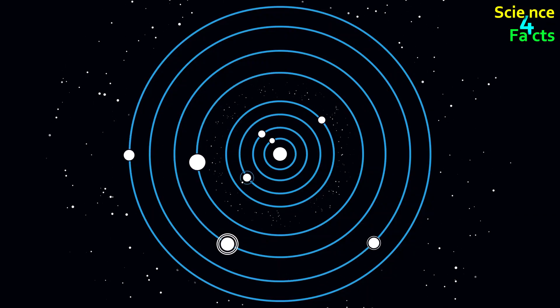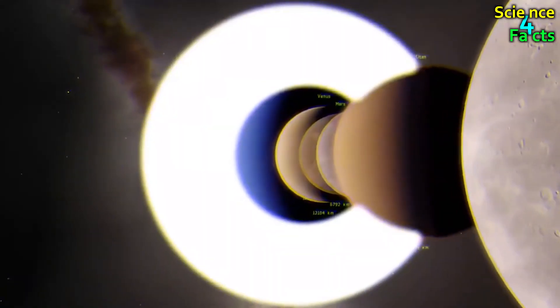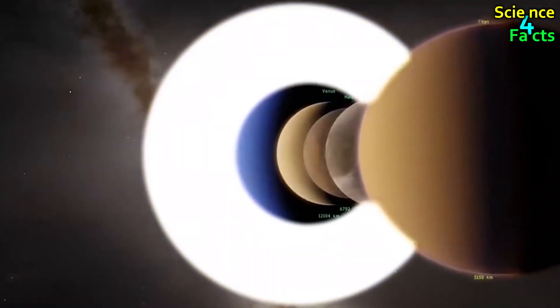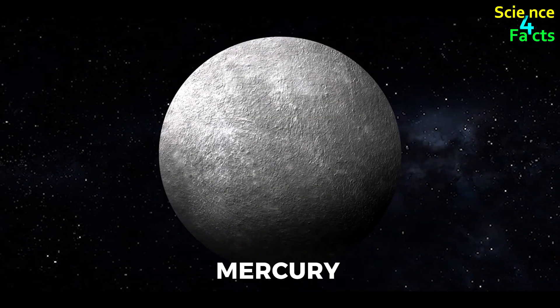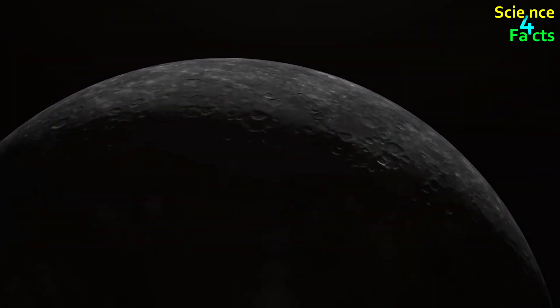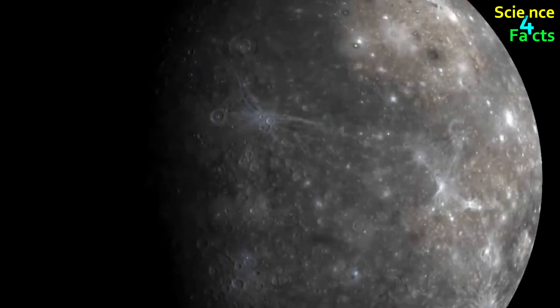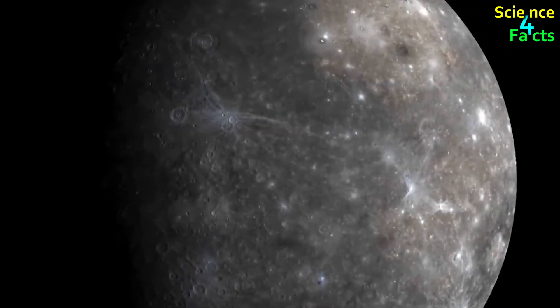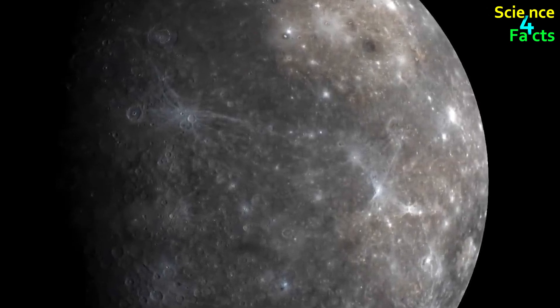Let's begin by examining the rain on the planets within our solar system. Six planets in the solar system receive rain. Mercury, the first and smallest planet closest to the Sun, has an extremely thin atmosphere, or it can be said that it lacks an atmosphere. Consequently, no wind, clouds, or rain can be observed on Mercury.